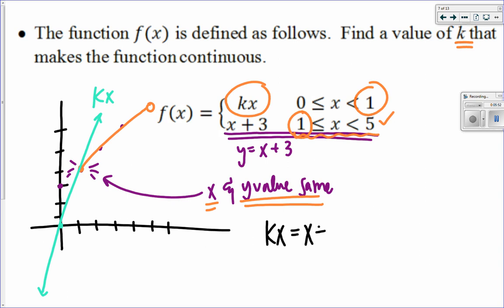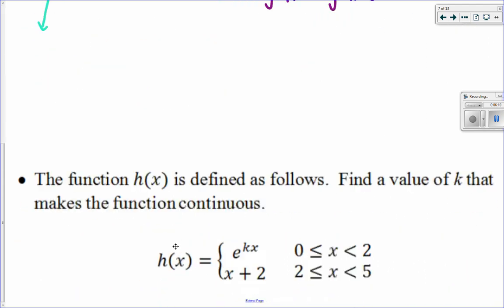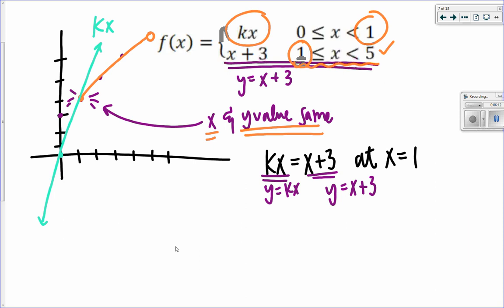The y values being the same would mean I set these pieces equal to each other. kx is equal to x plus 3 at x equals 1. Why? Because this is y equals kx, and this is y equals x plus 3. So I set up this equation, and I solve. I'm going to make that a little lower. Set it up. Now I can plug in my x equals 1. So I really have k is equal to 1 plus 3. k is equal to 4.